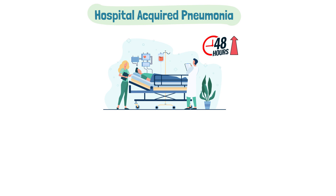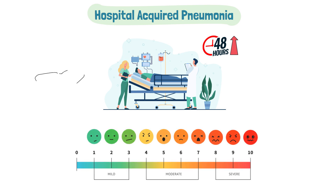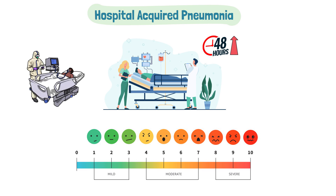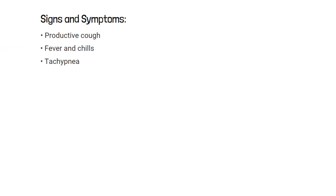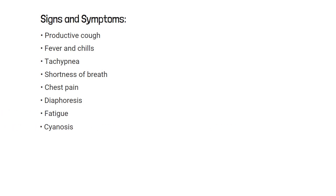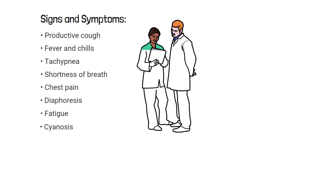A pneumonia infection can vary from mild to severe depending on the patient's signs and symptoms. Some examples to look for include a productive cough, fever and chills, tachypnea, shortness of breath, chest pain, diaphoresis, fatigue, and cyanosis. Being able to recognize the signs and symptoms is important for the diagnosis, treatment, and patient outcome.